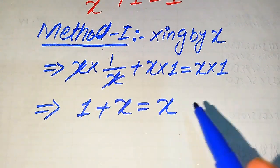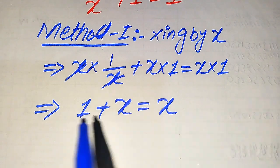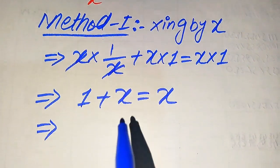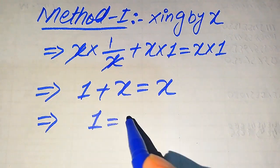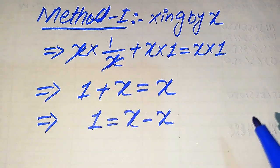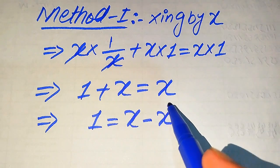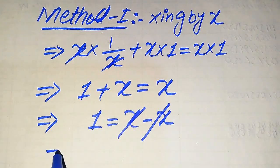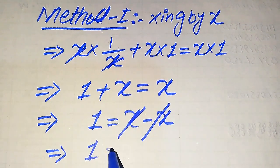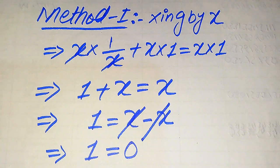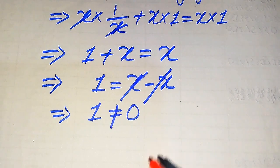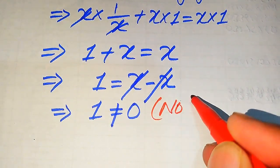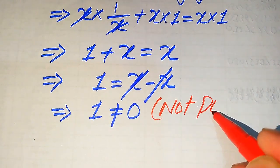Now when we move the plus x to the right hand side, it becomes 1 equals x minus x. The negative and positive x terms cancel, and we get 1 equals 0. Since 1 equals 0 is not a possible case, this is a contradiction.